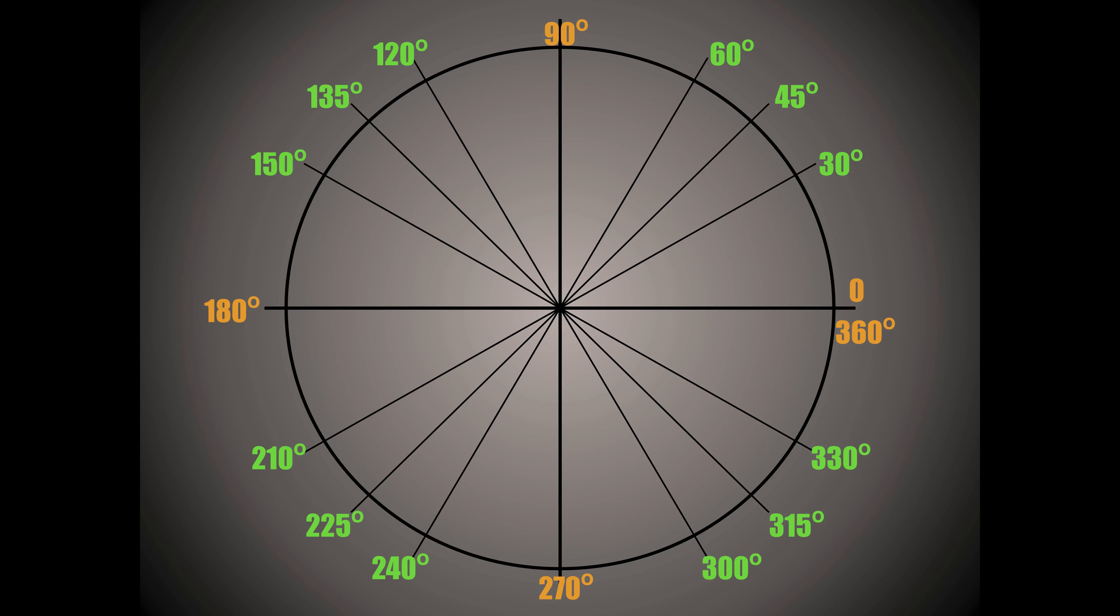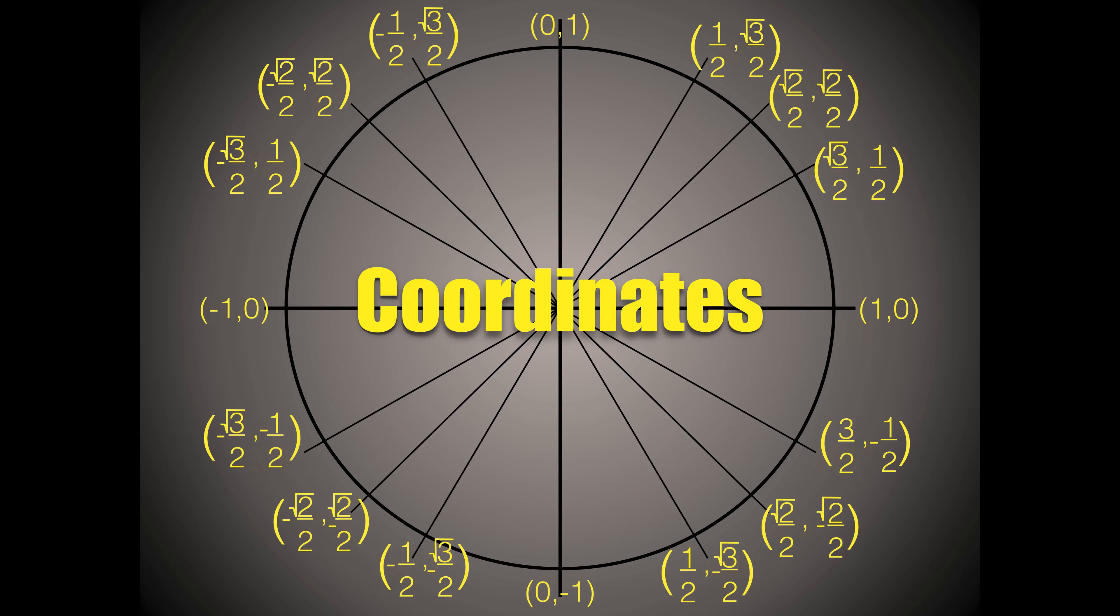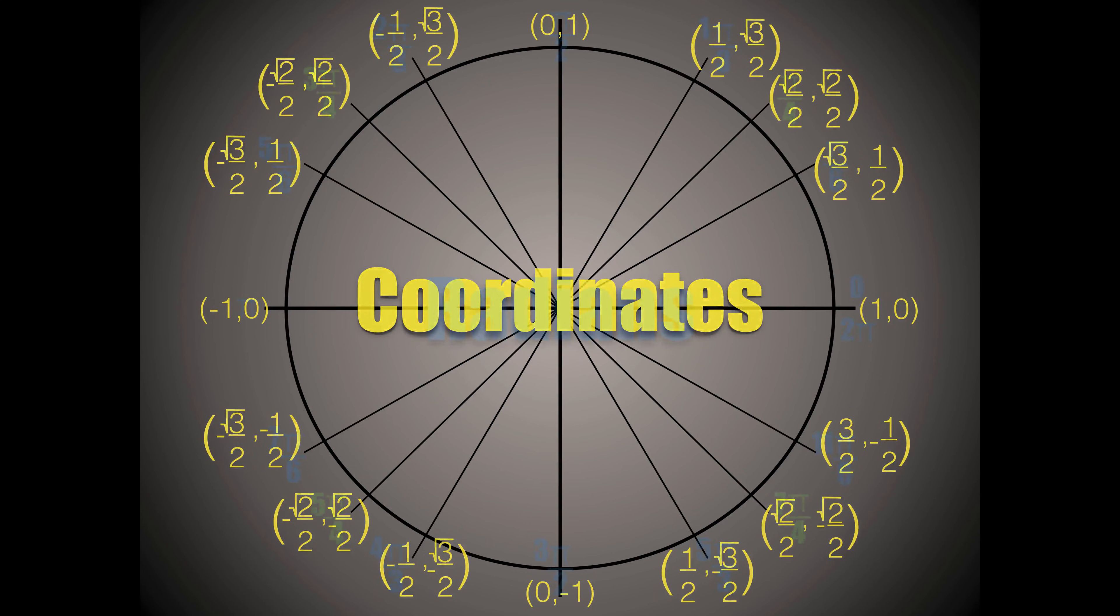And then our coordinates, going back to our first video, these are the coordinates to the unit circle. And then our radians, recall that the blue are divided into sixths, and that's every 30 degrees you add one sixth to it, and then you can go back and simplify them. And then our numbers in green are represented by our fourths, so every 45 degrees you add a fourth.